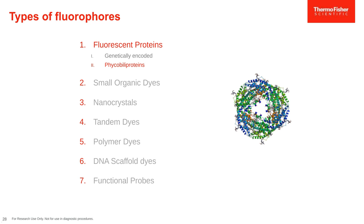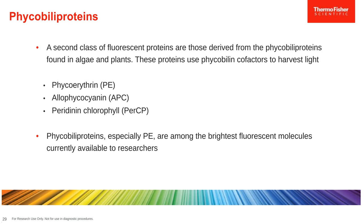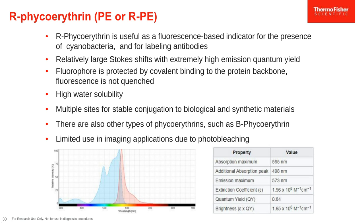Let's move on to phycobiliproteins, another class derived from phycobiliproteins found in algae and plants that harvest light. PE, APC, and PerCP are used fairly extensively in flow cytometry and are among some of the brightest fluorescent molecules available. PE, or phycoerythrin, is a fluorescence-based indicator from cyanobacteria with a fairly large Stokes shift and extremely high emission quantum yield. It's protected by covalent binding of the protein backbone so fluorescence is not quenched, is water soluble, and has multiple sites available for conjugation. APC is isolated from various species of algae and also has a very large Stokes shift and high quantum yield, with a protected backbone, and is water soluble and stable for conjugation.